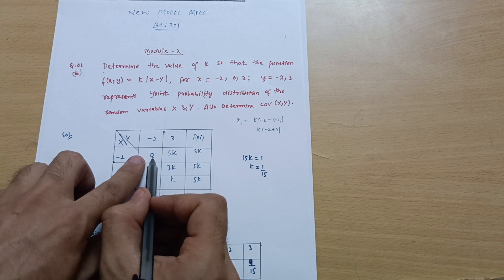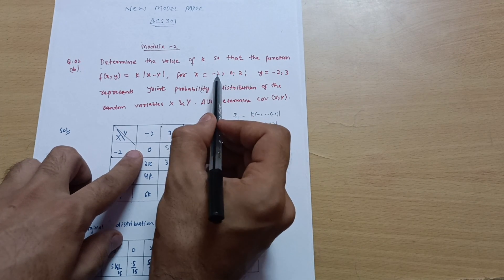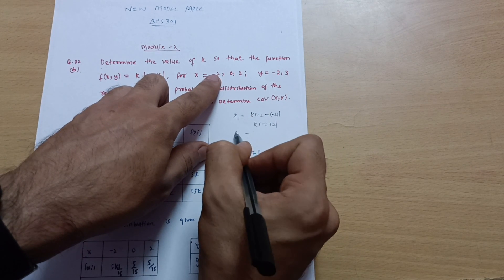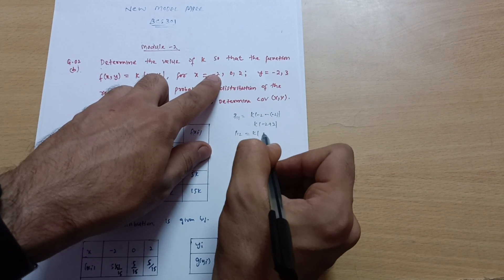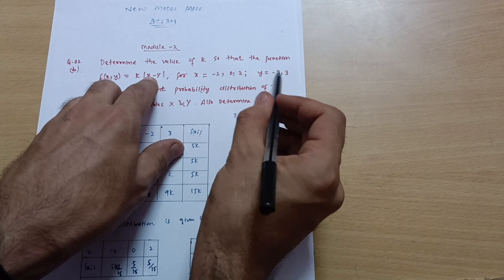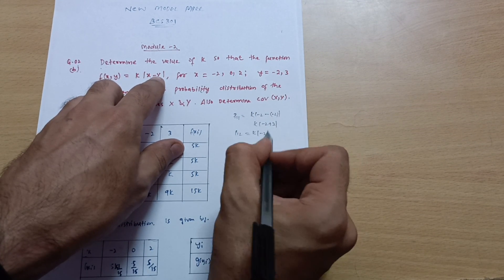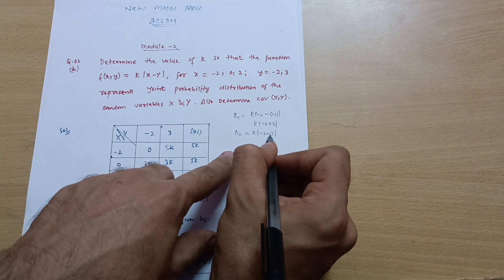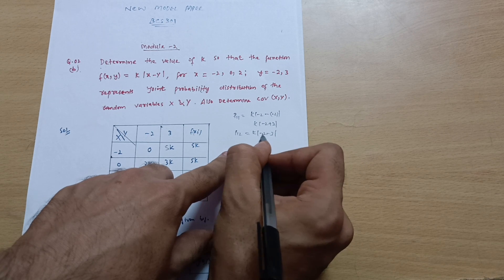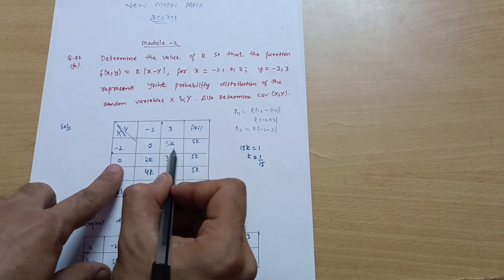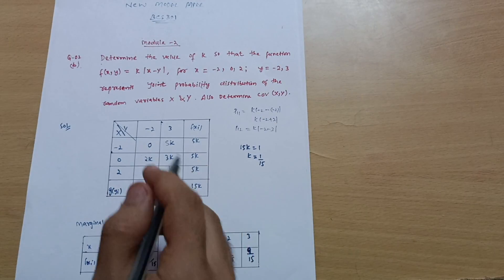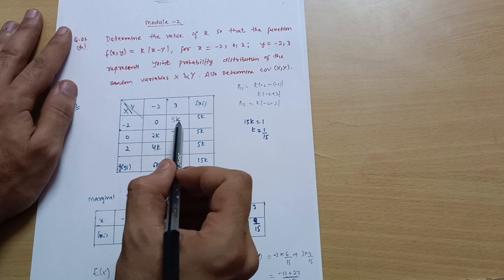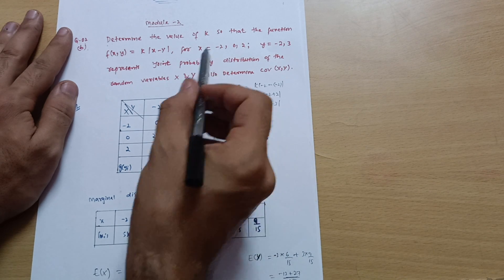Likewise, for p12 take x = -2 and y = 3: k * |-2 - 3| = k * |-5| = 5k. The mod always gives a positive value. By substituting all x and y combinations into the equation, you can formulate the complete probability table.